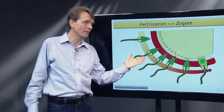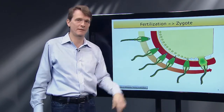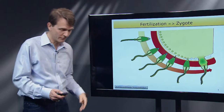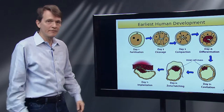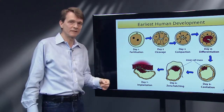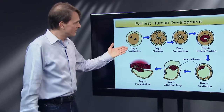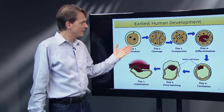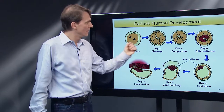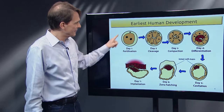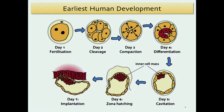Every multicellular organism starts with the so-called zygote — the first cell. Then development, human development, proceeds by cell divisions. The initial cell divisions actually divvy up the material in the fertilized egg more or less equally amongst the first few cells.